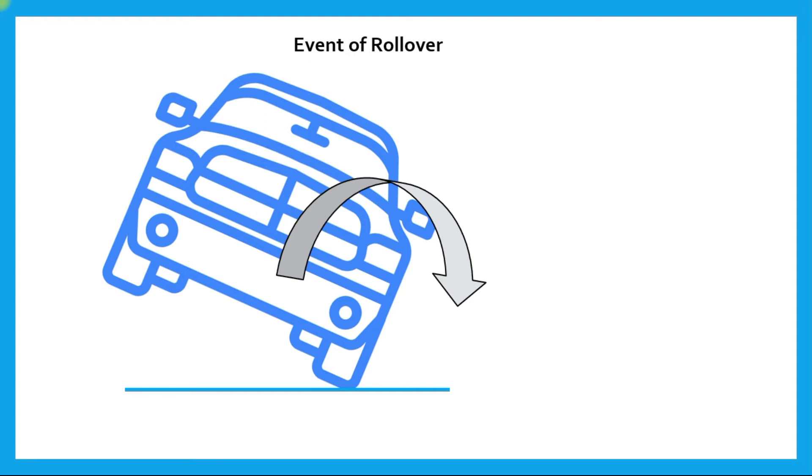Now the point to note here is the rollover action is directly dependent on the amount of centrifugal force which is getting developed at the CG. So it is directly dependent on the lateral acceleration which is impinged on the vehicle.